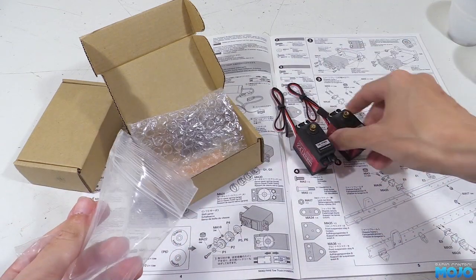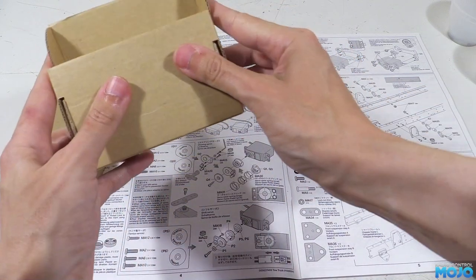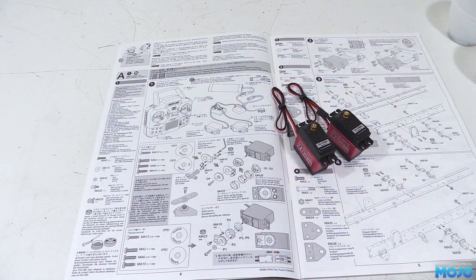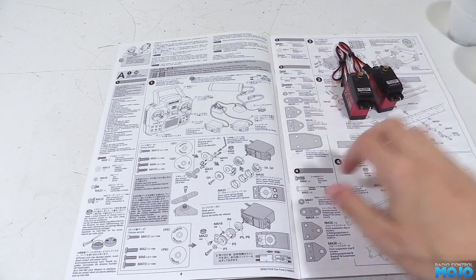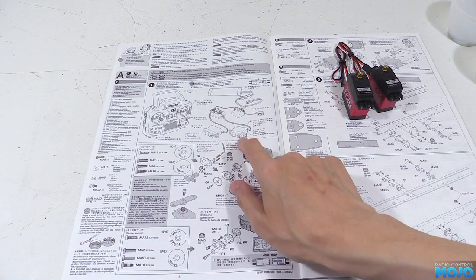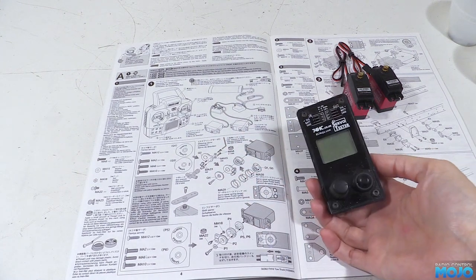The very first part of the manual has us power up the servos, with the receiver and transmitter. This is partly to test the system, but the main thing is we need the servos centred before we fit the servo savers. Pairing up the system with the trim centred will work, but if you're into building kits like this, I'd really invest in a servo tester.